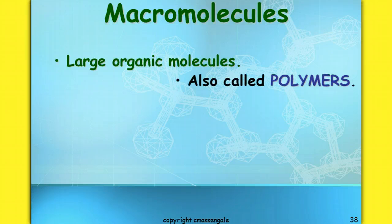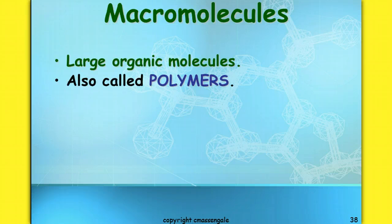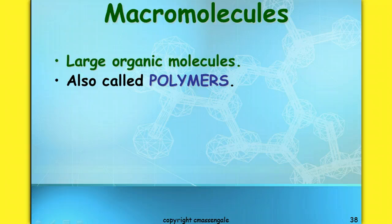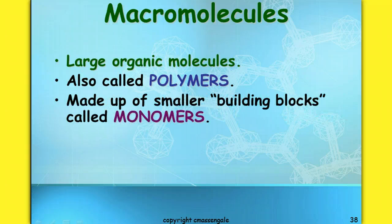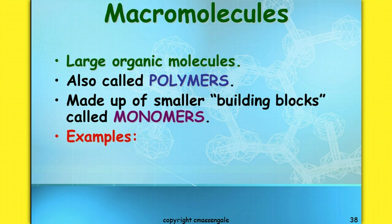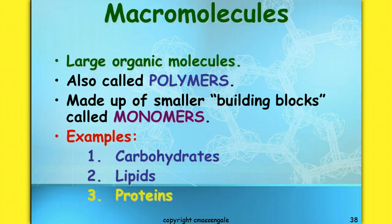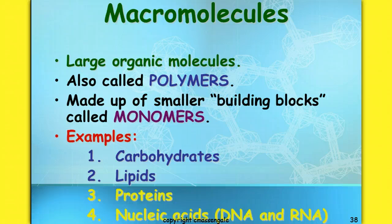These macromolecules are large organic molecules, and another name for them is polymer. That prefix poly means many and will come up a lot. Basically, a polymer is one of these large molecules made up of many smaller building blocks, and all of those smaller repeating subunits are called monomers — mono means one. Some examples are carbohydrates, lipids, proteins, and nucleic acids like DNA and RNA.